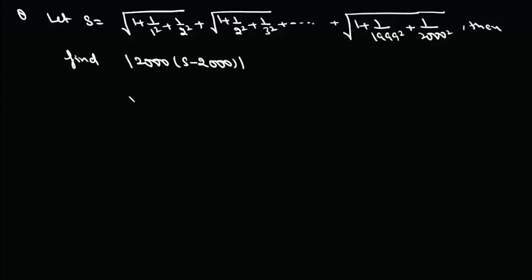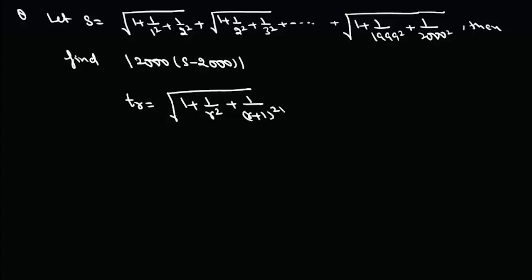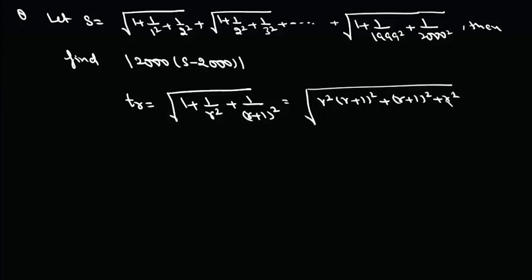Writing the general term, the r-th term t_r is √(1 + 1/r² + 1/(r+1)²). We can rewrite this as √( [r²(r+1)² + (r+1)² + r²] / [r²(r+1)²] ).